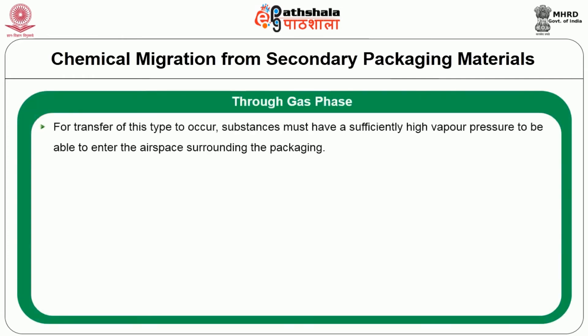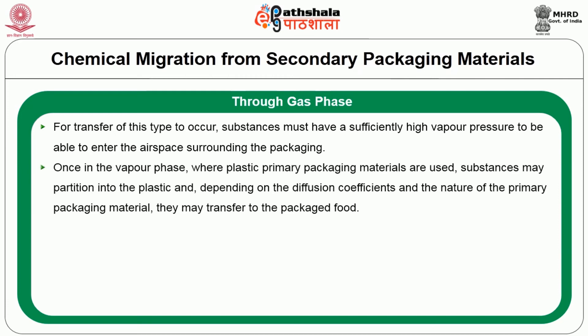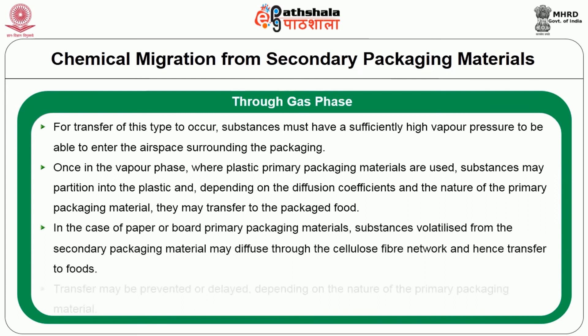The second route is through the gas phase. For transfer of this type to occur, substances must have a sufficiently high vapour pressure to be able to enter the airspace surrounding the packaging. Once in the vapour phase, where plastic primary packaging materials are used, substances may partition into the plastic and, depending on the diffusion coefficients and the nature of the primary packaging material, they may transfer to the packaged food. In the case of paper or board primary packaging materials, substances volatilized from the secondary packaging material may diffuse through the cellulose fiber network and hence transfer to the foods.